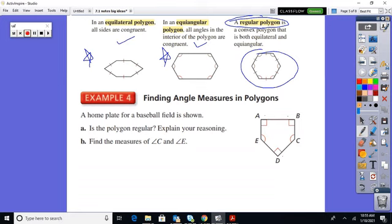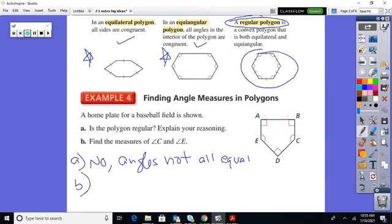So we would say, no. Angles not all equal. And then for part B, find the measure of C and E. Well, let's see here. We have one, two, three, four, five different angles.